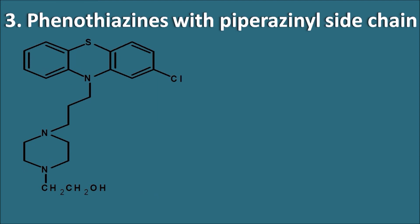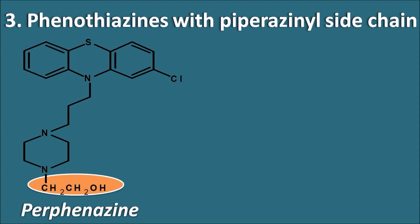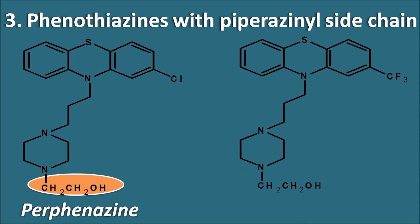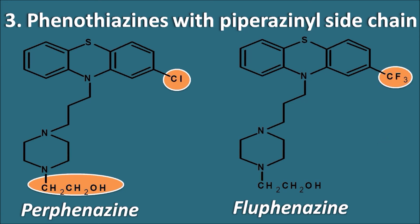Other drugs in this category have a simple modification on the piperazine ring system. Instead of a methyl group on the piperazine nitrogen, these have a CH₂CH₂OH group. These drugs are perphenazine and fluphenazine, which differ only by the group at the second position: perphenazine has the chlorine group, whereas fluphenazine has the trifluoromethyl group. Because fluphenazine has both the trifluoromethyl group at the second position and the piperazine side chain, it is the most potent drug in this category.